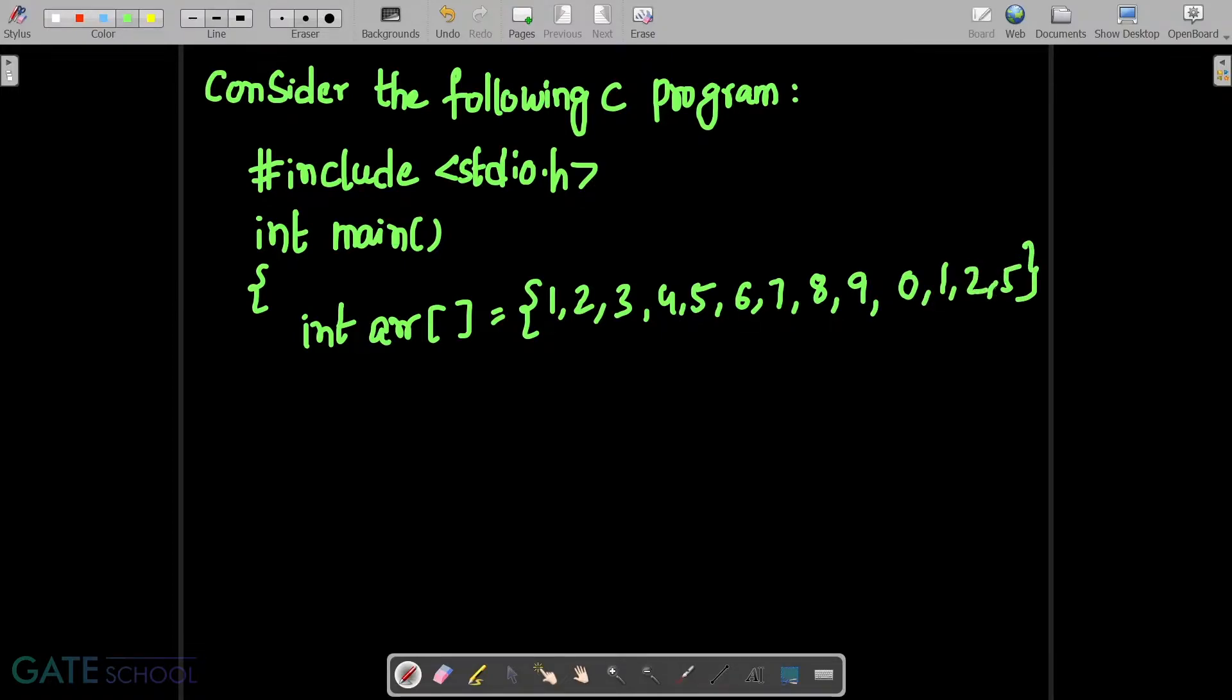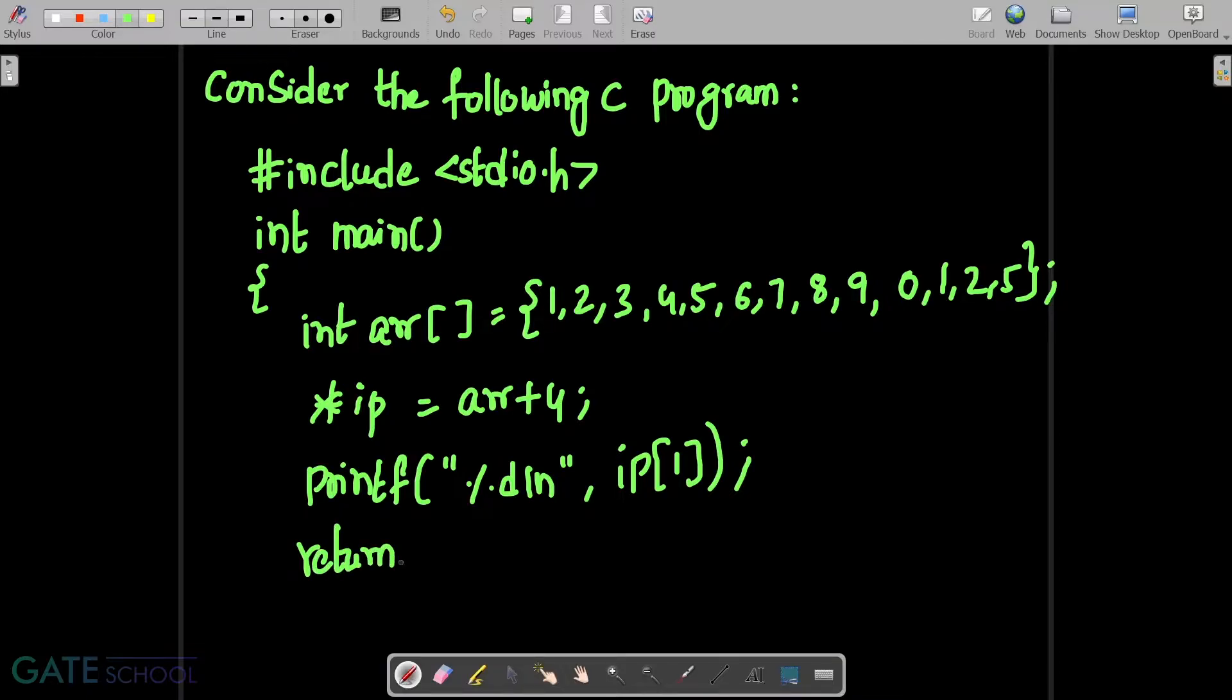5. Star IP is equal to array plus 4. Printf %d slash n, IP[1]. Return 0.